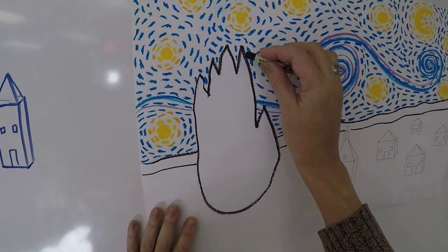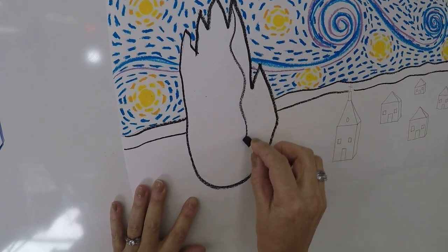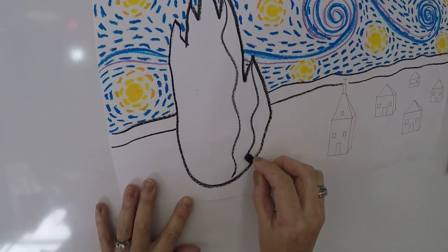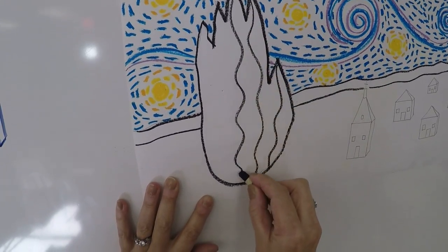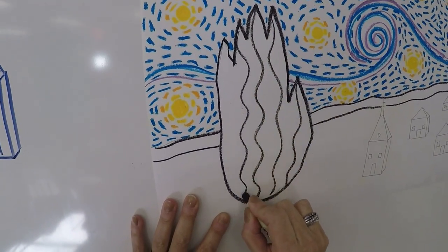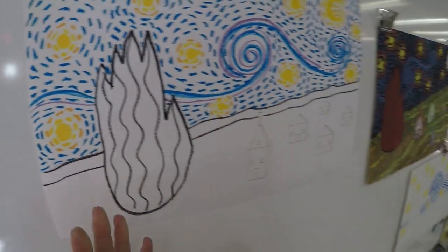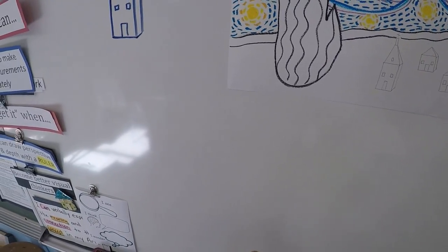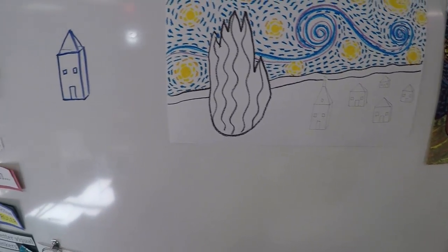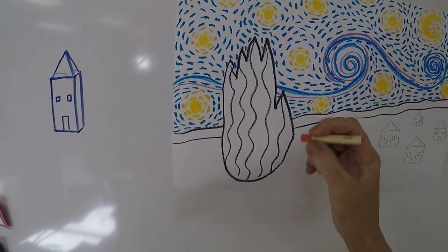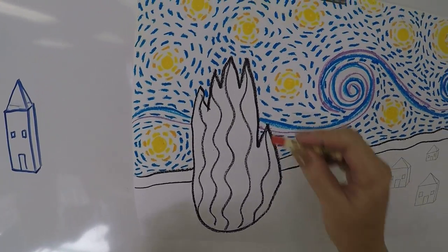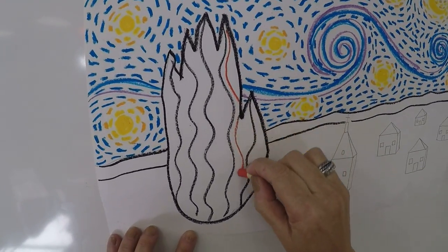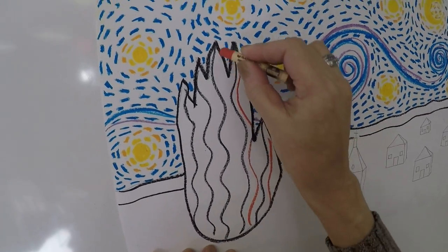With the cypress tree, we want to put little squiggly lines, vertical squiggling lines. I am also going to take a red and I like to put a little bit of red over there also or red orange.